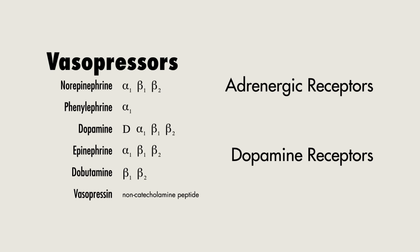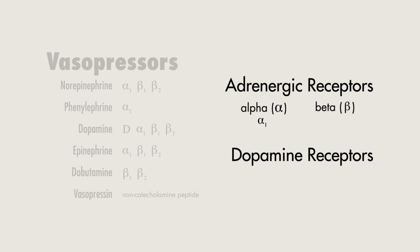Breaking this down further, when thinking about the adrenergic receptors, you should know two main categories: the alpha receptors, specifically the alpha-1 receptor, and the beta receptors, specifically beta-1 and beta-2 receptors.